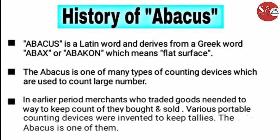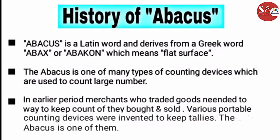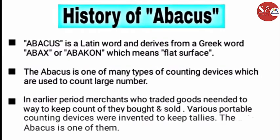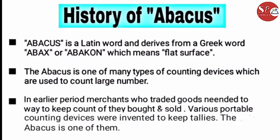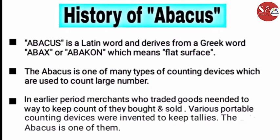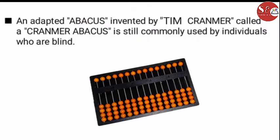The second point is that Abacus is one of many counting devices. The third point is that the first people who bought goods needed to count them — that is why all of these counting devices were invented. Abacus is also a device used to count how much money they could spend. This adapted Abacus was invented by Tim Kalman, so this Abacus is also known as a criminal Abacus. Mostly, these Abacuses are used by the blind, or you can say visually impaired.